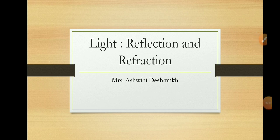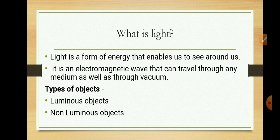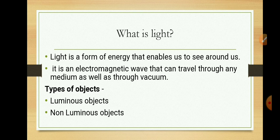So let's start with what is light. We can define light as a form of energy that enables us to see around us. It is an electromagnetic wave that can travel through any medium as well as through vacuum. Light is a non-mechanical wave which does not require any medium for its propagation. So we can define light as an electromagnetic wave which produces the sensation of sight in our eyes.